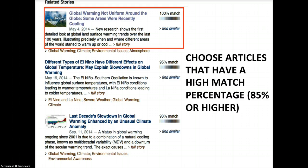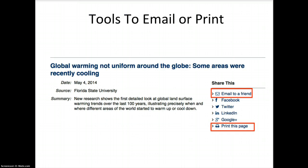It's called "Global Warming Not Uniform Around the Globe — Some Areas Were Recently Cooling." When I click on that, it takes me to the entire article. I see that there is a toolkit that makes it possible for me to email to myself or to other people. I can also format the page for printing, and I can share it on social media such as Facebook or Twitter.